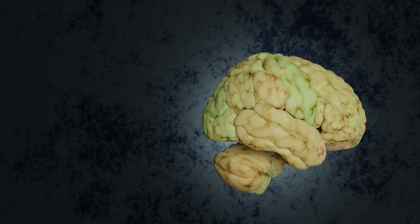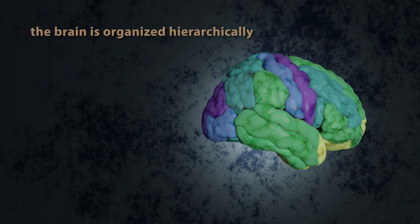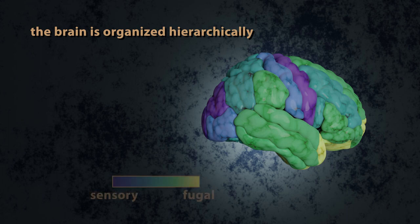In service of this functional goal, these cortical regions are thought to be organized according to a hierarchy that is defined by gradual changes to their profiles of cytoarchitecture. This hierarchy forms what we call the sensory-fugal axis.